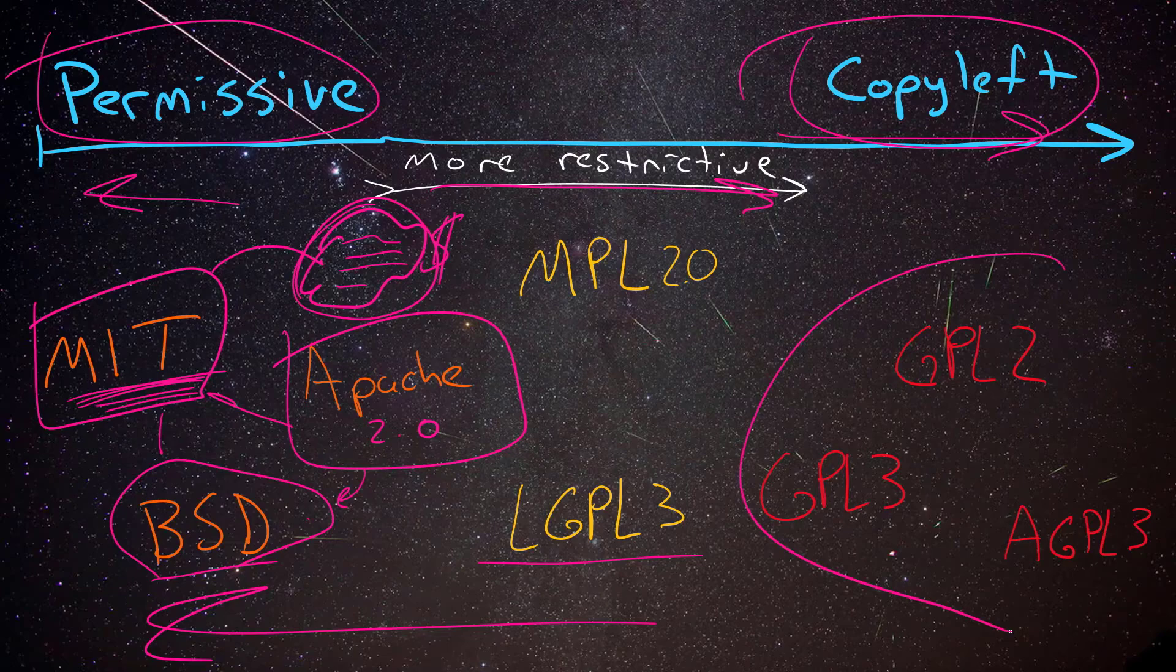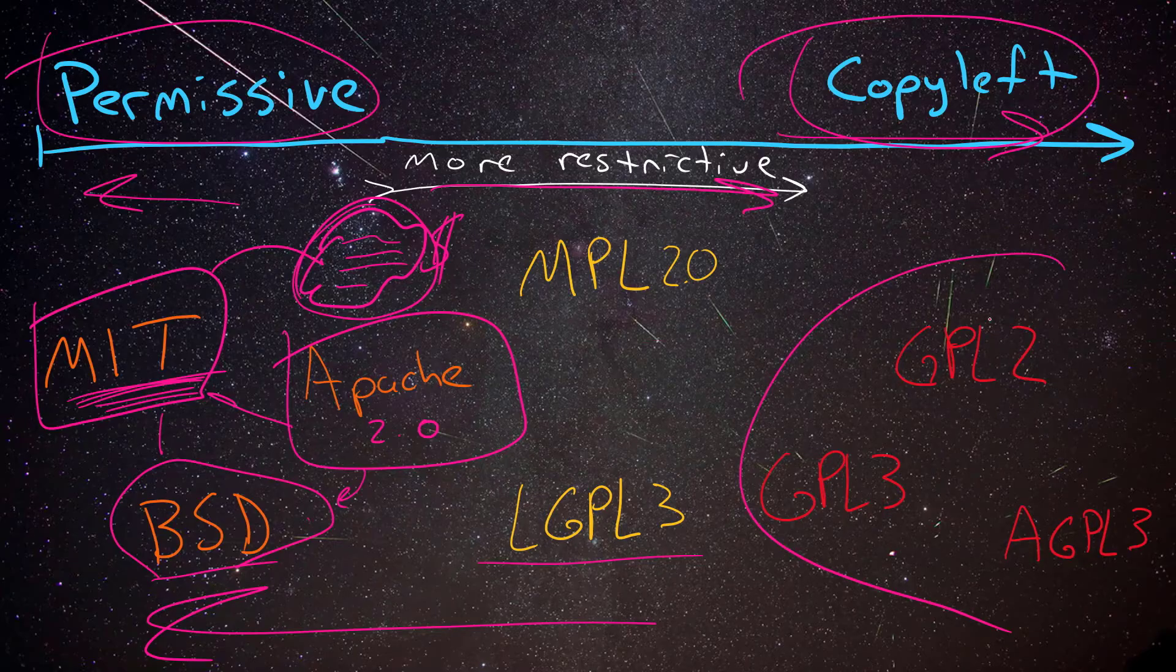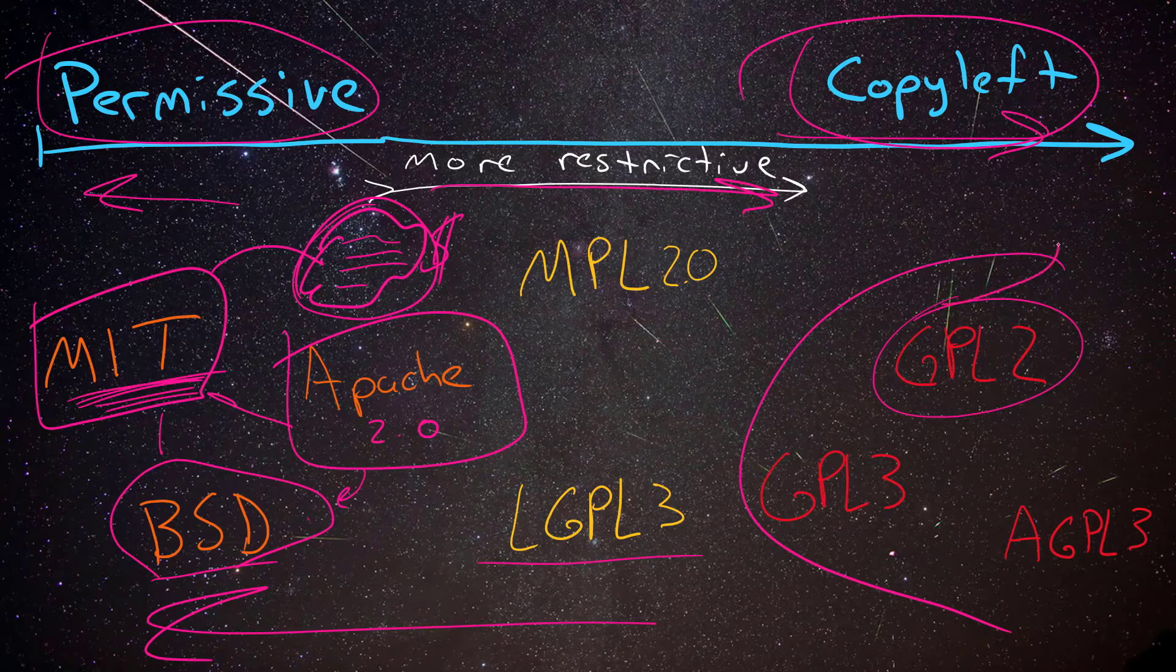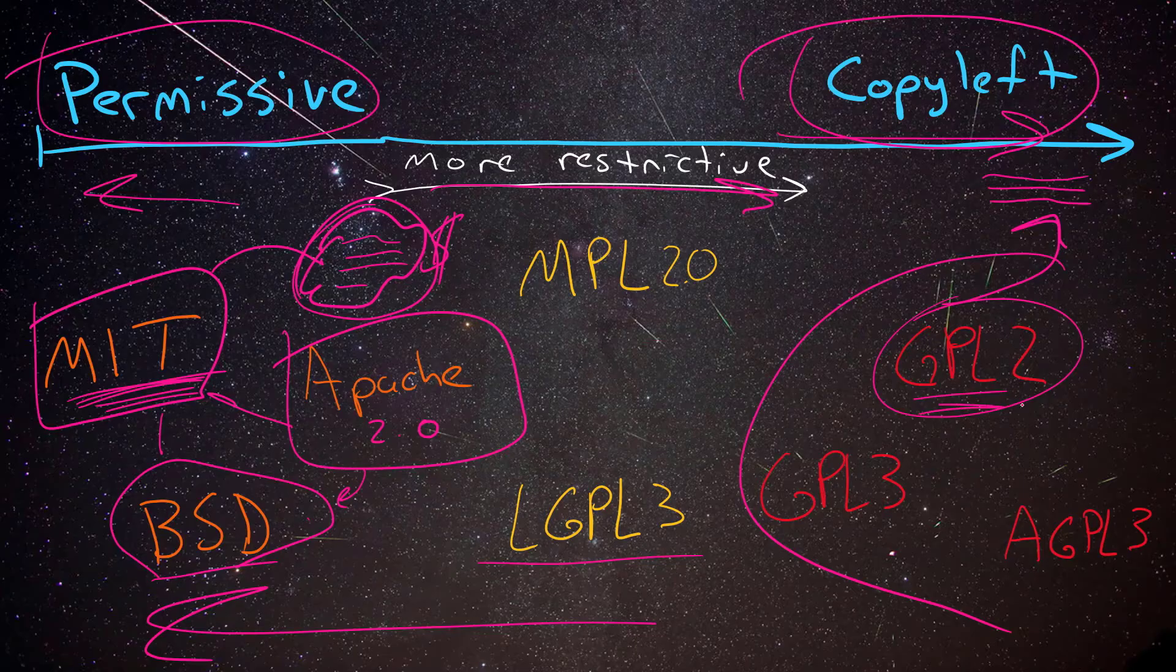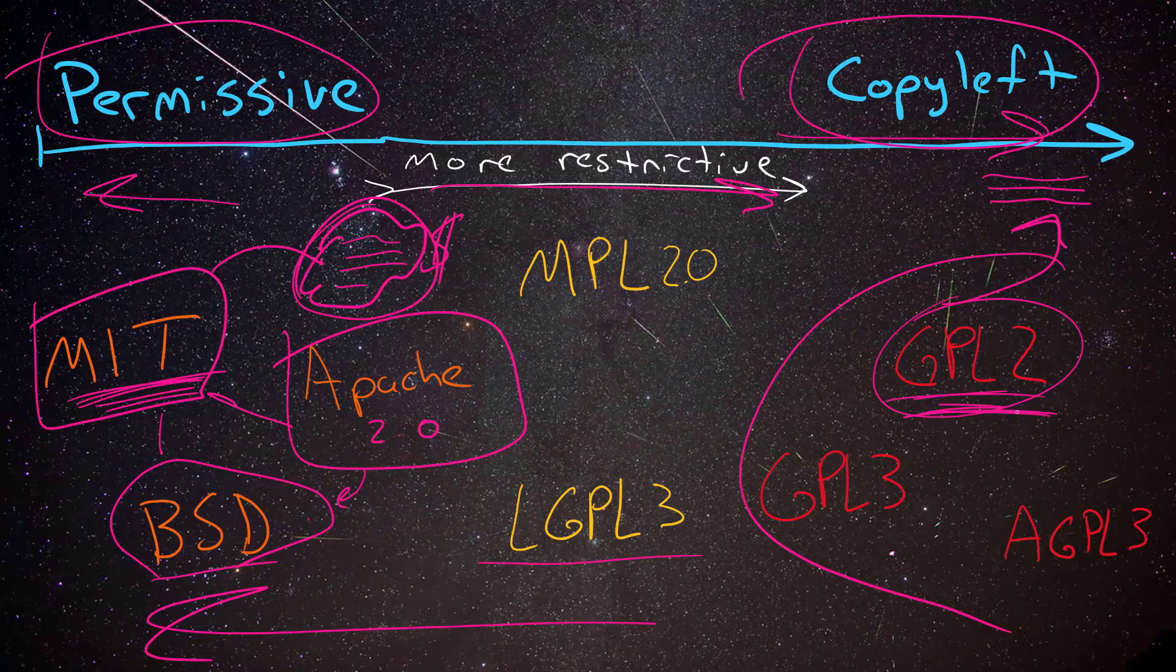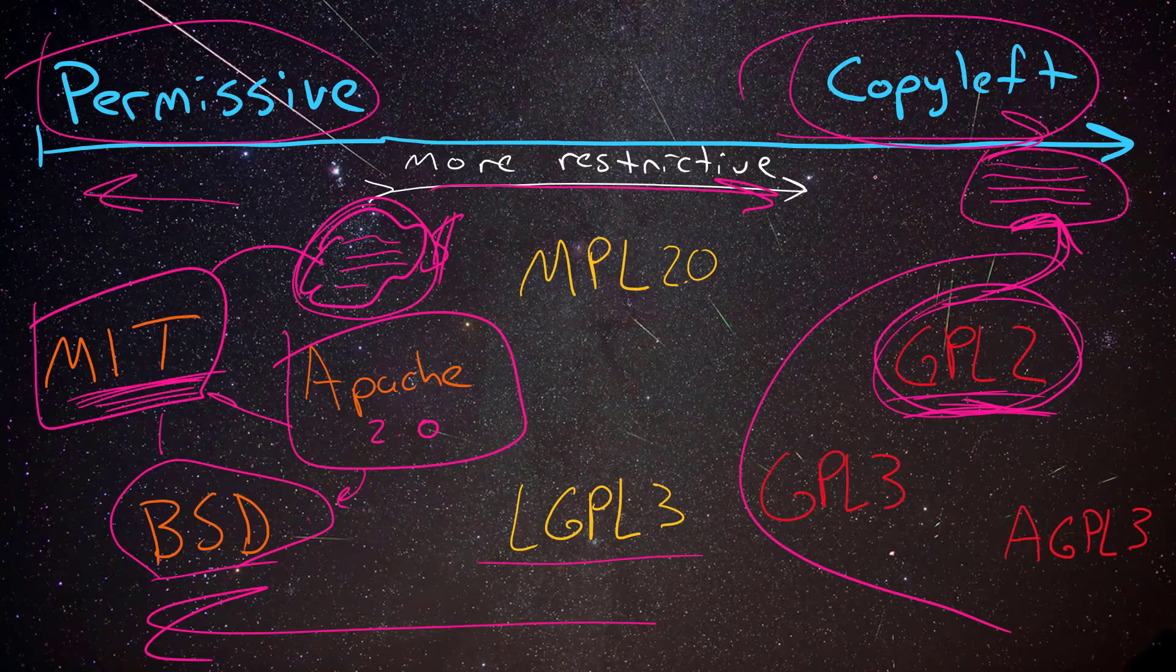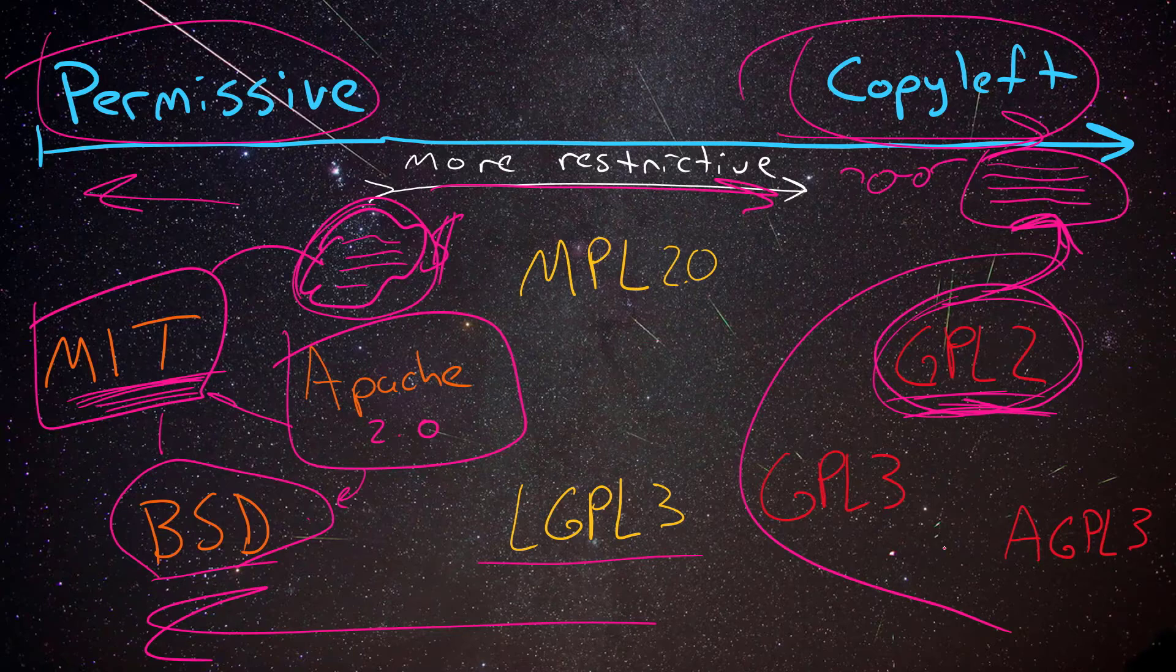When you get more restrictive, it means yes, you can use the source code from whatever is licensed in GPL2, but you have to give away and make available any of the source code that you write that includes this open source code you're using. So if you use something licensed in GPL2, you can do that. However, you also then have to release your code because you've used GPL2 code. So when you add to it, whatever you write has to be available for everybody else to look at as well. That's what we mean by more restrictive and copyleft.